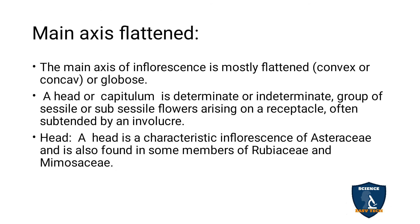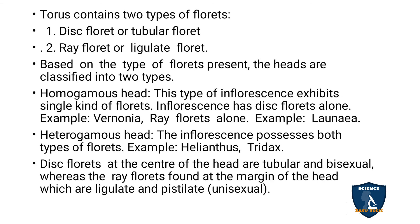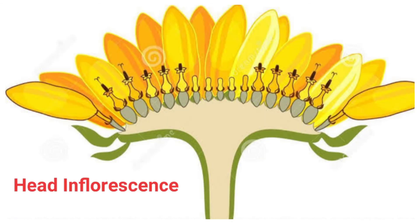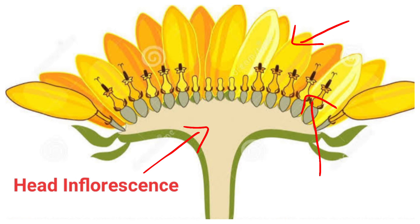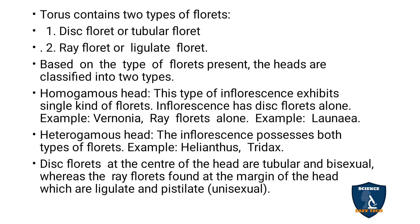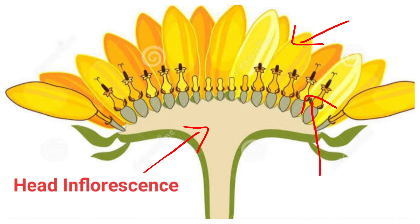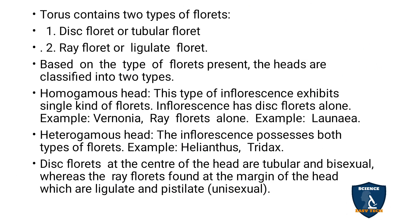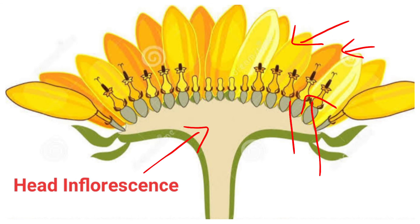When the main axis is flattened, the type is called head or capitulum. The head inflorescence has a receptacle or torus which possesses two types of florets: ray florets at the periphery and disc florets at the centre. Ray florets are also called ligulate florets because of their tongue-like appearance, while disc florets are tube-shaped and called tubular florets.